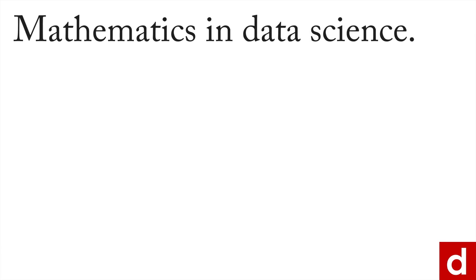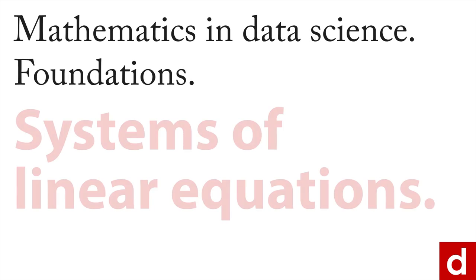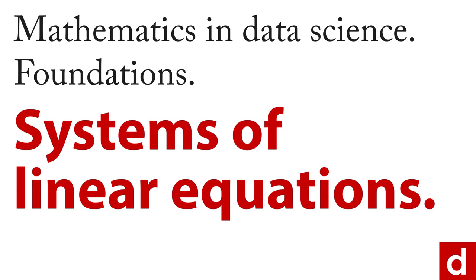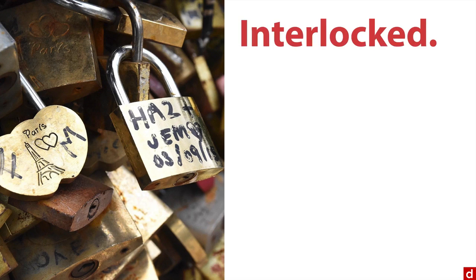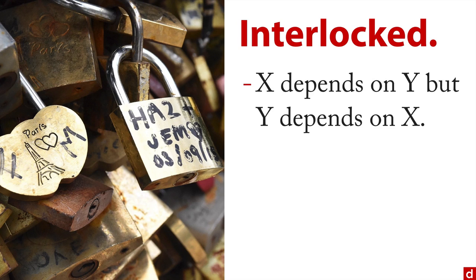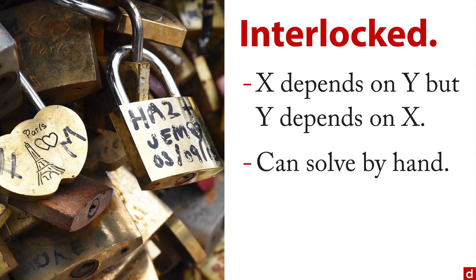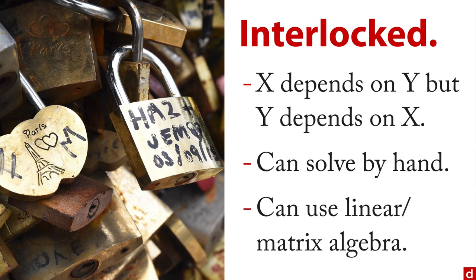Our next step in mathematics for data science foundations is systems of linear equations. The idea is there are times when you have many unknowns and you're trying to solve for all of them simultaneously. What makes this tricky is a lot of these are interlocked — x depends on y, but at the same time y depends on x. It's actually pretty easy to solve these by hand, and you can also use linear matrix algebra to do it.